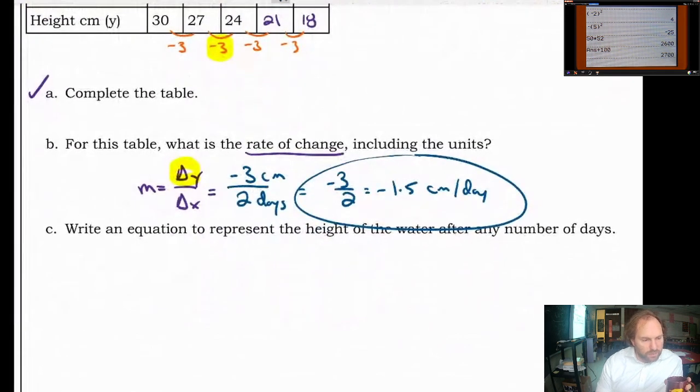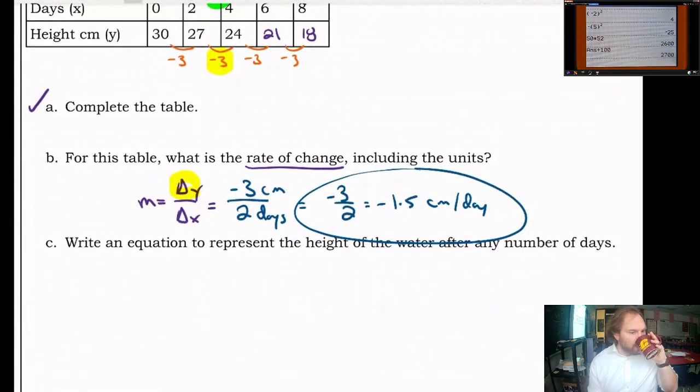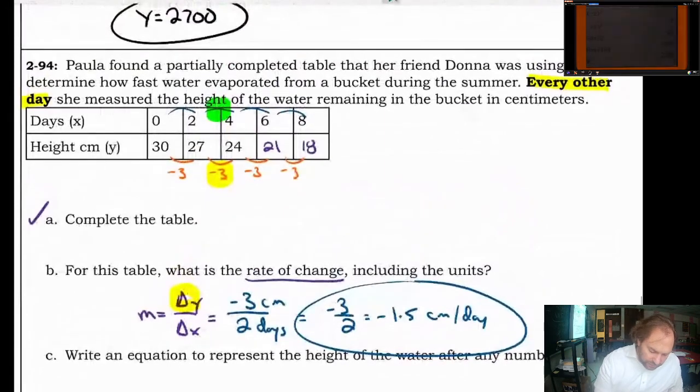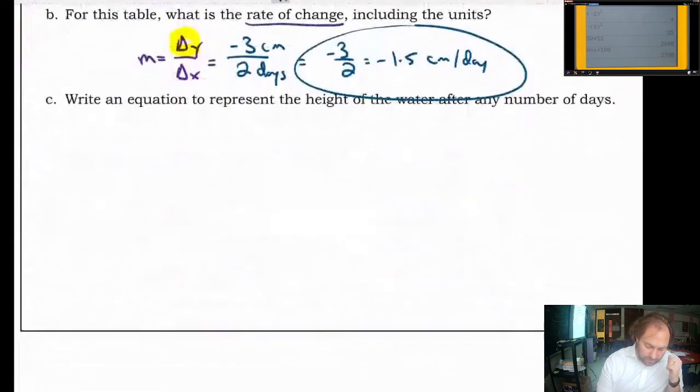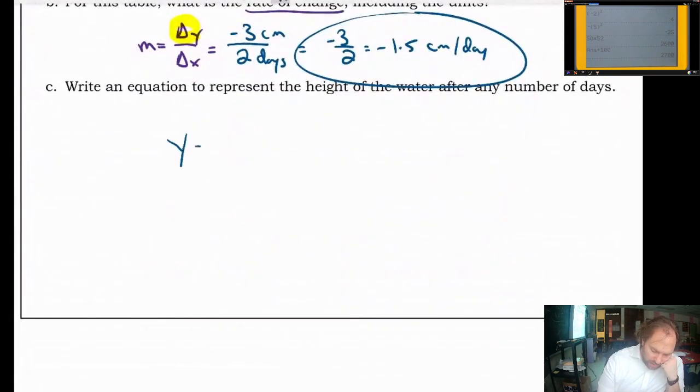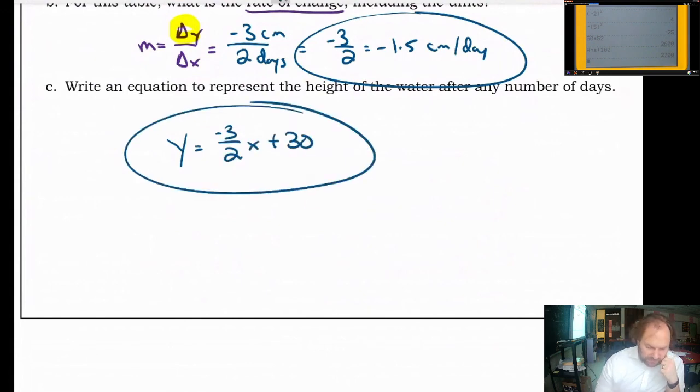Write an equation to represent the height of the water after any number of days. So what's nice about this is if you look at the table they actually did give us the Y intercept. It's right there. B is 30. You could go through that whole process that we did back a couple problems ago to figure out the Y intercept but you don't need to because they told it to you in the table if you look and think carefully. So this is going to be Y equals negative 3 over 2X plus 30. And that's all you really got to do there. Done and done.